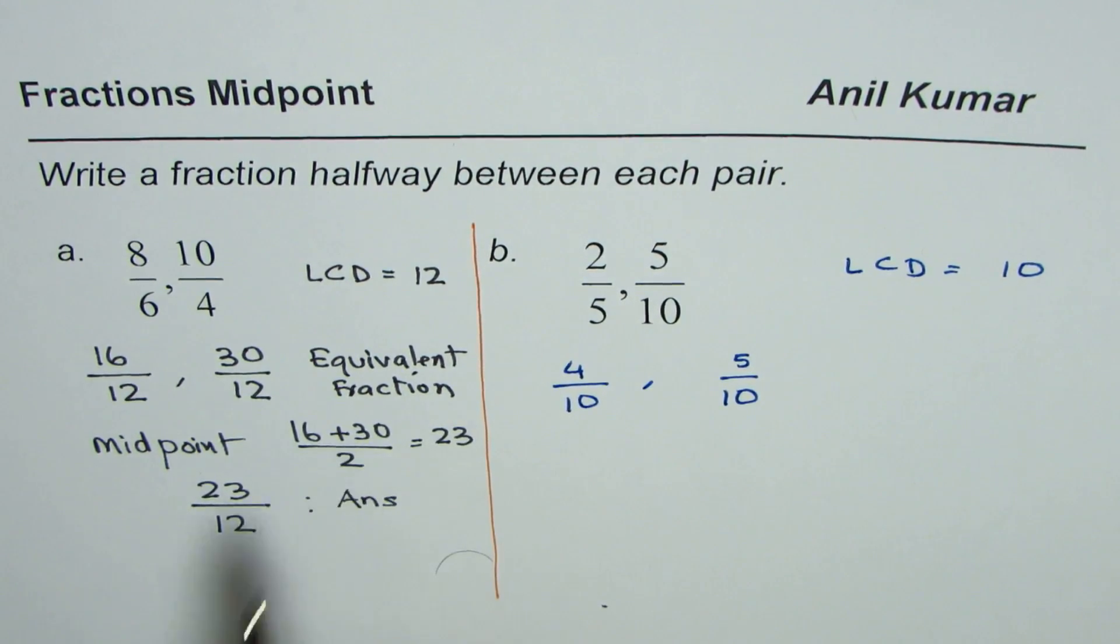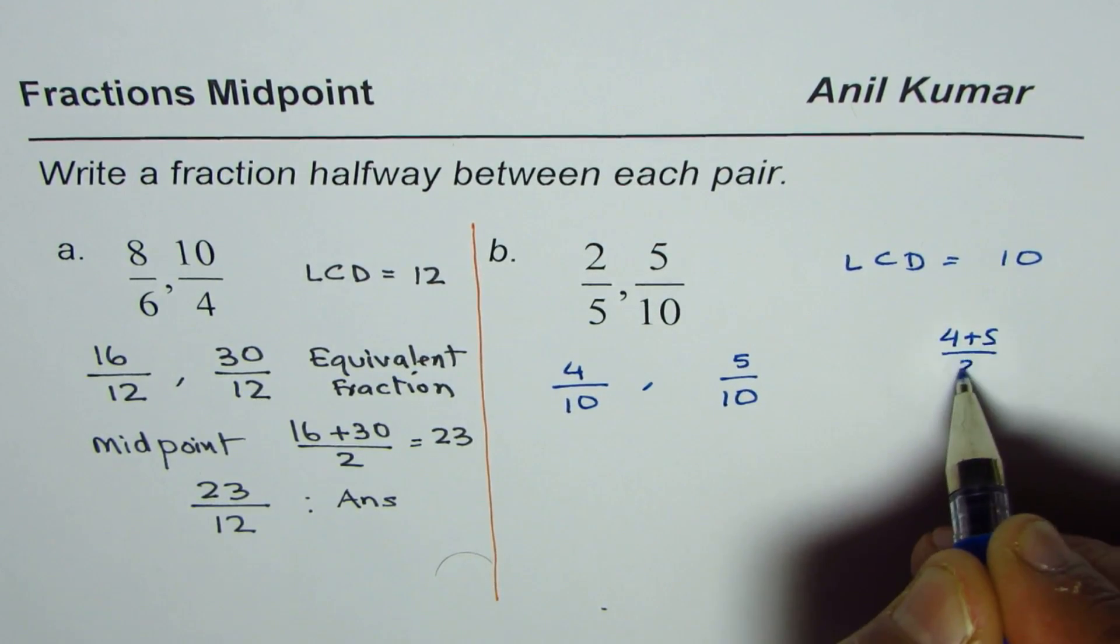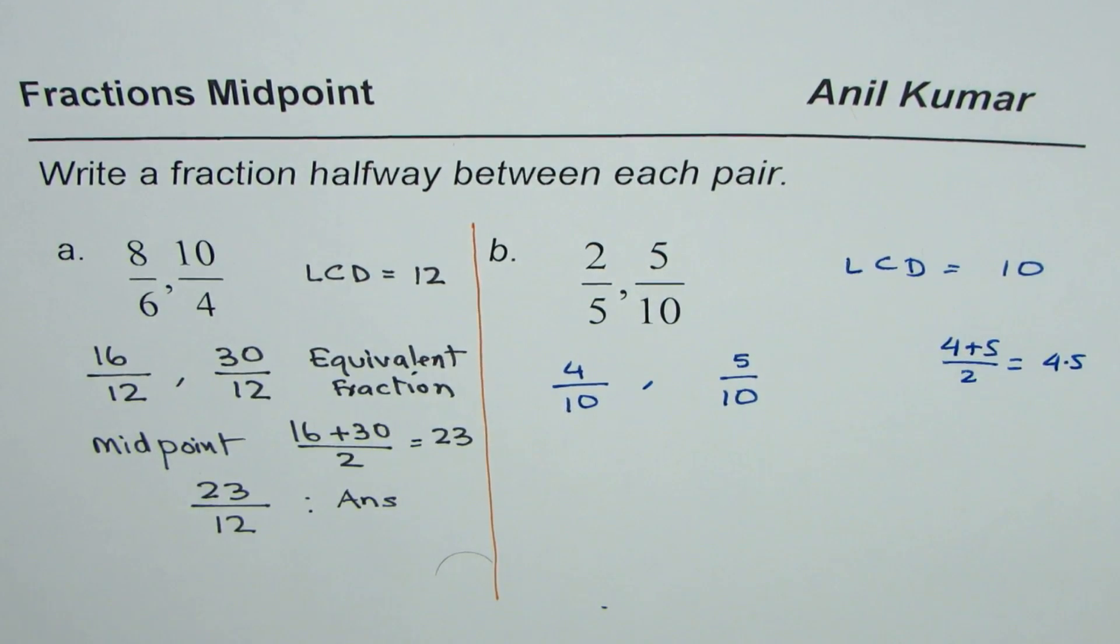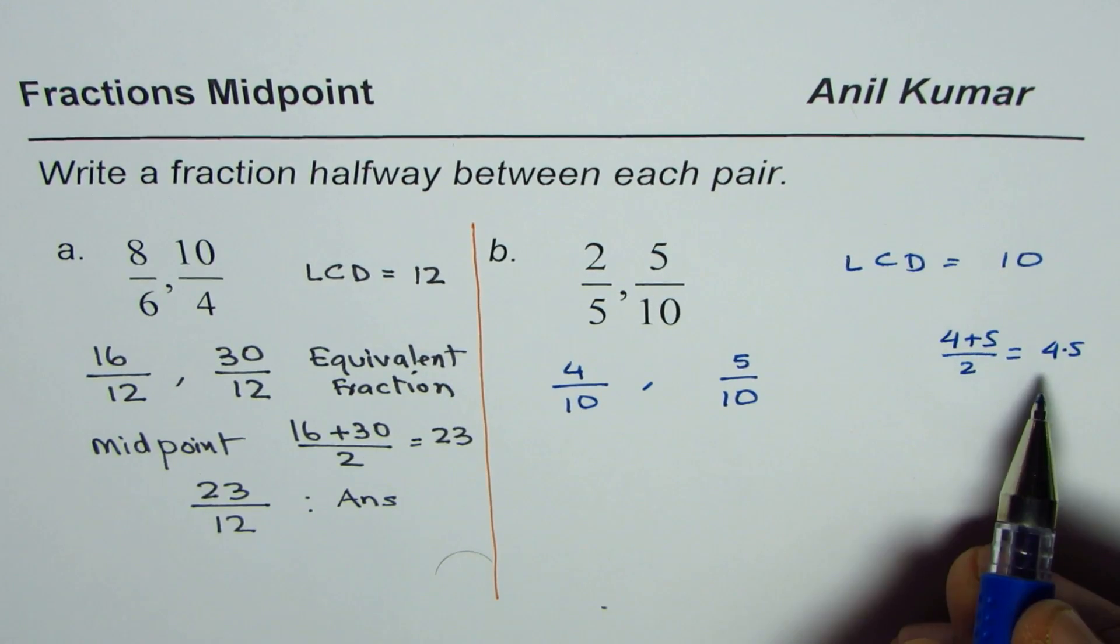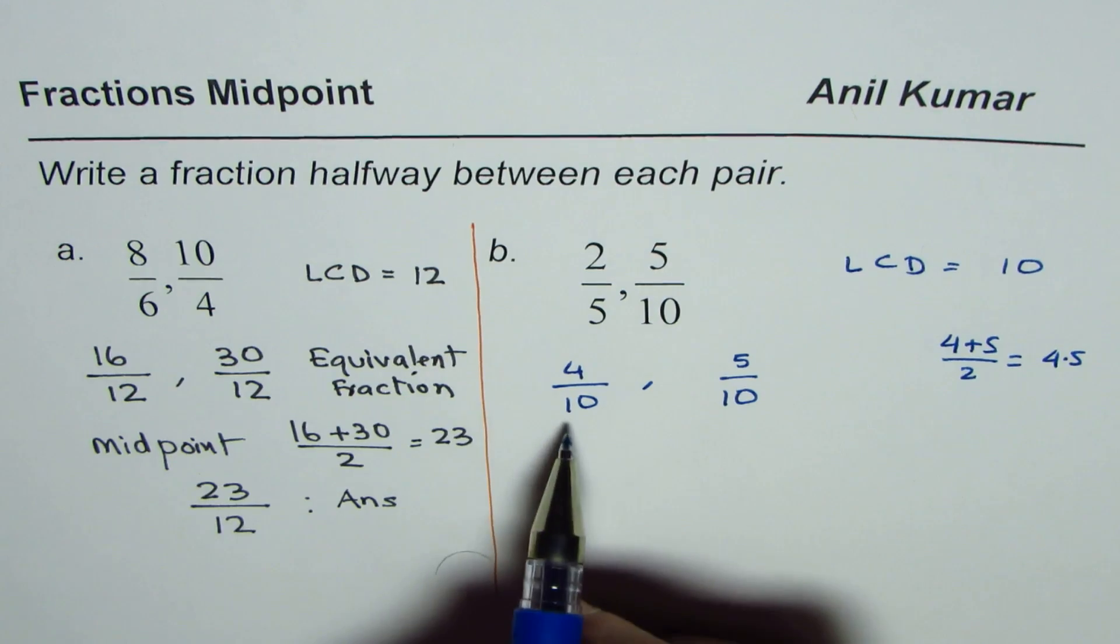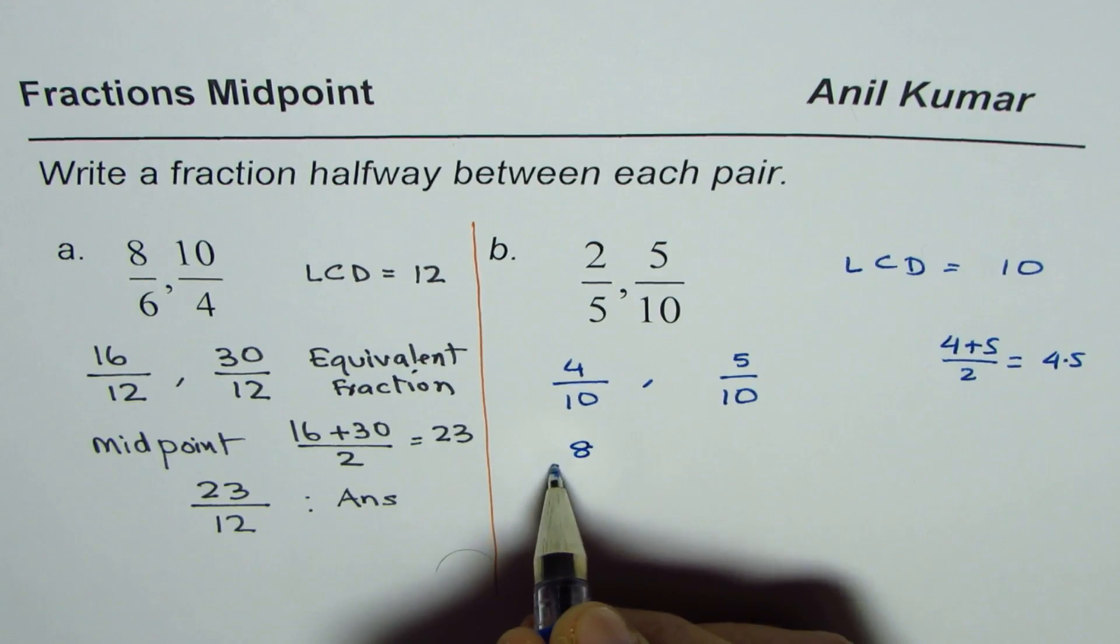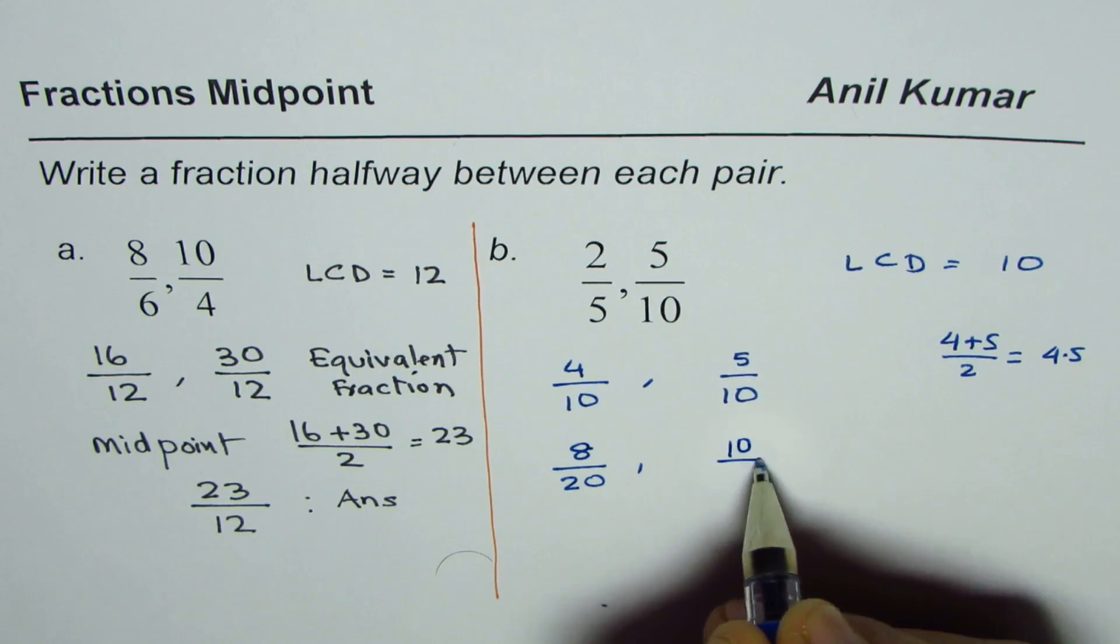Now as we found the midpoint if I do 4 plus 5 divided by 2 I get 4.5. It is a decimal number. So now how do I get the fraction out of it? What we can do is we can go with higher denominator. So instead of 10 let's multiply both by 2. So what do we get? We get 8 over 20 and we get 10 over 20.